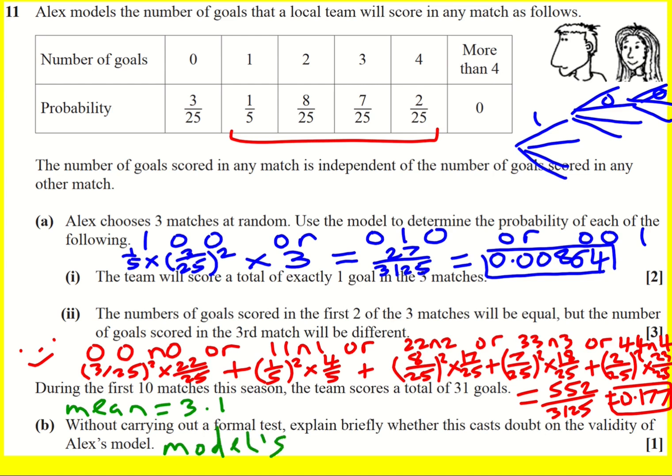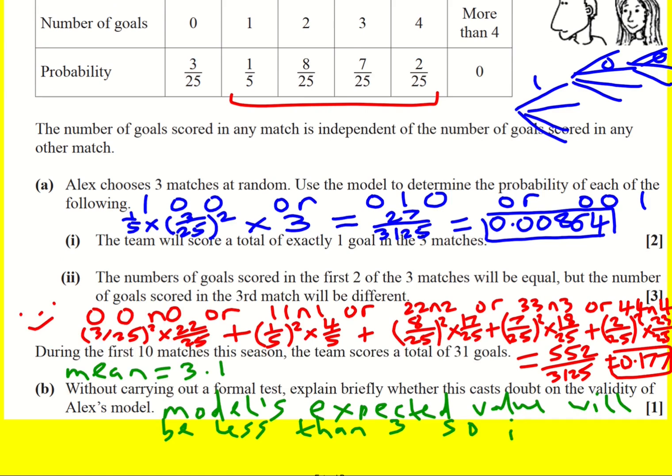So, the model's average will be less than 3. There are ways to calculate the mean, or sorry, we call it the expected value, the probability distribution. It's not on the syllabus. You might want to look into it. But, as they said, that would be carrying out a formal test. So, model's expected value will be less than 3. So, it may not be reliable. Nice one.